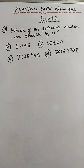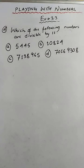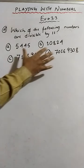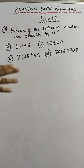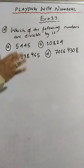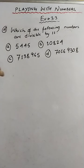Hello students. In this session I will explain question number 4 of exercise 3.3, chapter 'Playing with Numbers'. In question number 4 we have: which of the following numbers are divisible by 11? There are 6 sums altogether. I am going to explain the first 4 sums, and the rest 2 sums will be your homework. To check whether a number is divisible by 11 or not, we have to use the divisibility rule for 11.